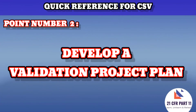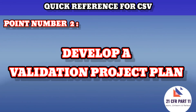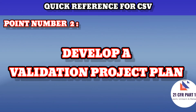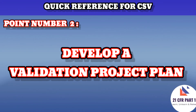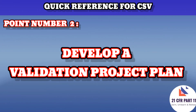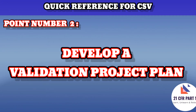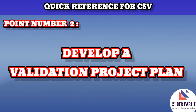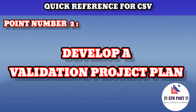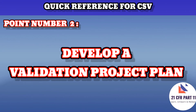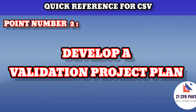Point number two says to develop a validation project plan. The regulatory expectation says the validation plan should define the activities, procedures, and responsibilities for establishing the adequacy of the system. The validation project plan is derived from the company's validation master plan, and it specifies the strategy, approach, risk assessment, resources, responsibilities, activities, and deliverables with a timetable. It can be written in table template or flow text form, and when to write it must be decided by the project team.